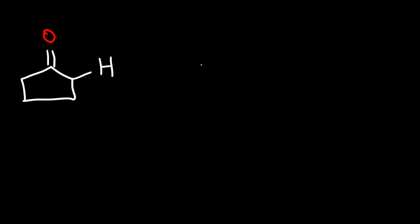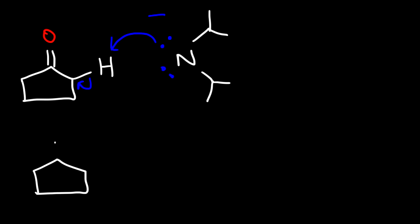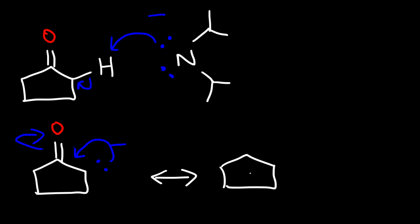In the first step, we're going to deprotonate the acidic alpha hydrogen. The diisopropyl amide, with its negative charge, is going to take off the hydrogen, and we're going to get a resonance-stabilized enolate ion. Here's the other resonance form that we could draw.